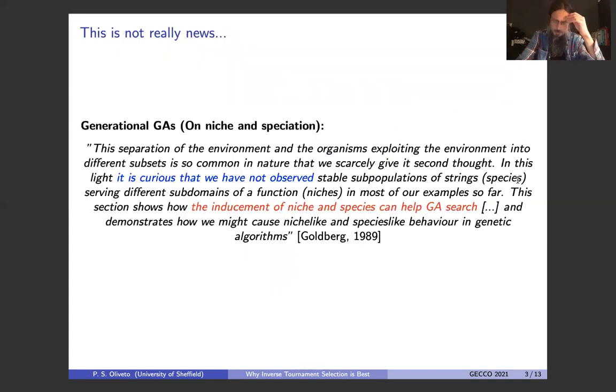So this is not really news, so at least the argument that evolutionary algorithms do not evolve different species of individuals. So David Goldberg, in his famous book, when introducing niche speciation, finds it curious that he has not observed subpopulations of strings or species, if you like, in different areas of the function. And in fact, he argues that to use diversity mechanisms to help genetic algorithms create these species.